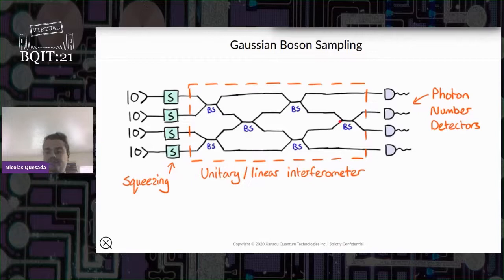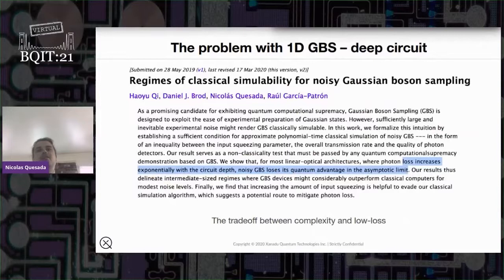It's a problem because we know that the loss is going to scale with the depth of the circuit. If the loss scales exponentially with the size of the problem, with the number of modes, then one can show in this paper that I collaborated on with Haoyu, Daniel, and Raul, that if the loss is increasing exponentially with the size of the problem, then at least in the asymptotic limit, your problem becomes classically efficient to simulate. You can actually write very simple, neat algorithms that allow you to generate samples of this lossy problem. The main idea behind this is that if there is a lot of loss, then your lossy squeezed states are very close to classical states of light for which sampling from the photon number distribution is very easy.